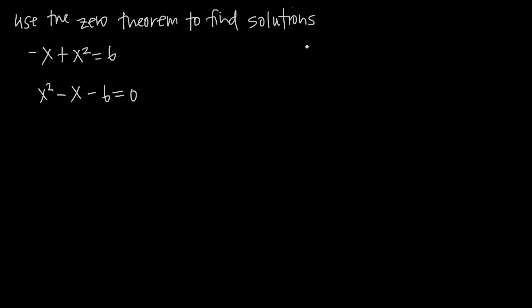We've been used to solving equations like x minus 3 is equal to 6 — we would just add 3 to both sides and get x is equal to 9. This is a linear equation because the only variable involved is x to the first. But here we have an x squared variable, which means we're dealing with a quadratic equation.